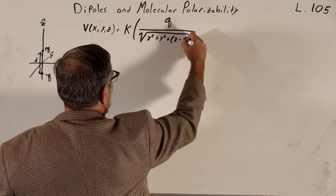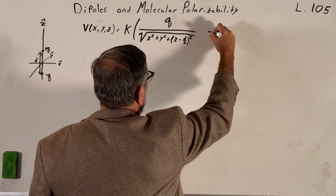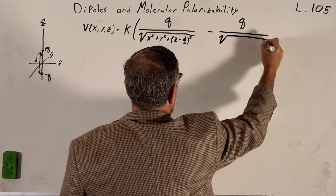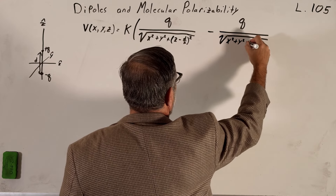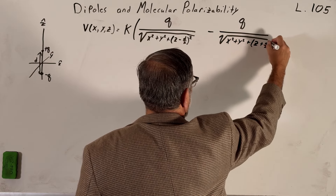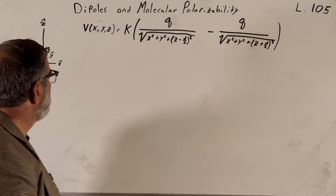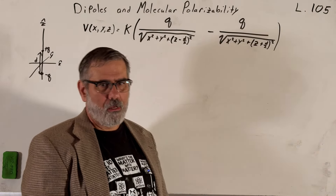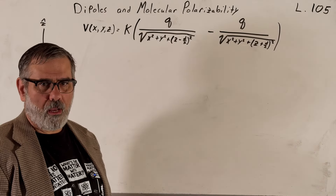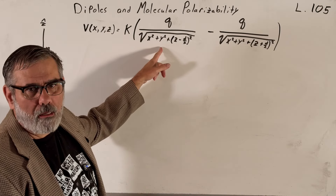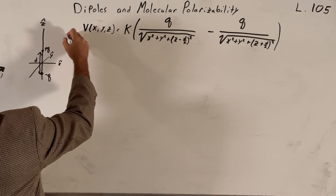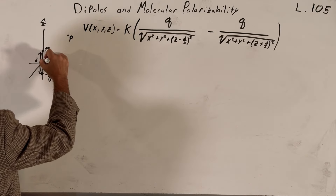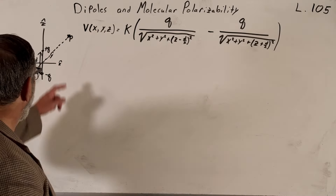Then minus — this is the negative charge, hence the minus sign — for the bottom charge, the radius is the square root of x squared plus y squared plus z plus d over 2 quantity squared. That is the potential for the dipole in three dimensions, with all the complexity that comes in Cartesian coordinates. We need a point of interest — let's call this point P — and r is the vector going to this point P. We compute the distance from P to the plus q charge, and then separately the distance from P to the minus q charge.